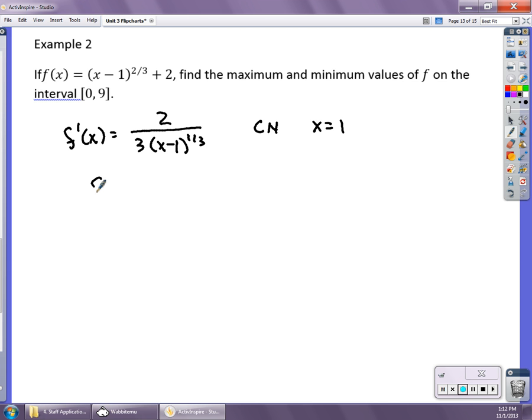I then need to calculate what is f(0). And when I did f(0), I got 3. I did f(1), my critical number, and I got 2. And then I did f(9), and I got 6. So again, this is the min of the function, and this is the max of the function on that interval.